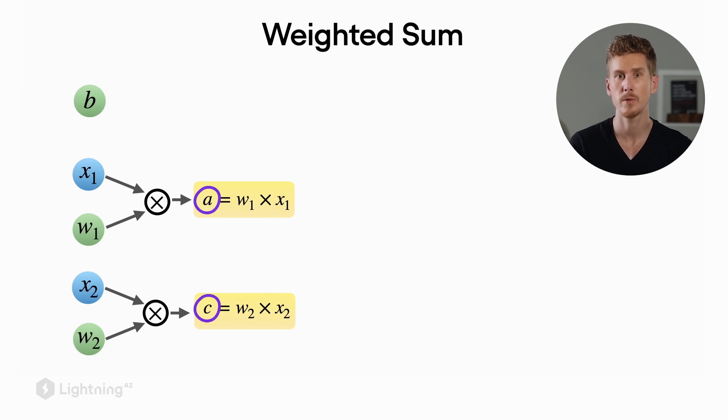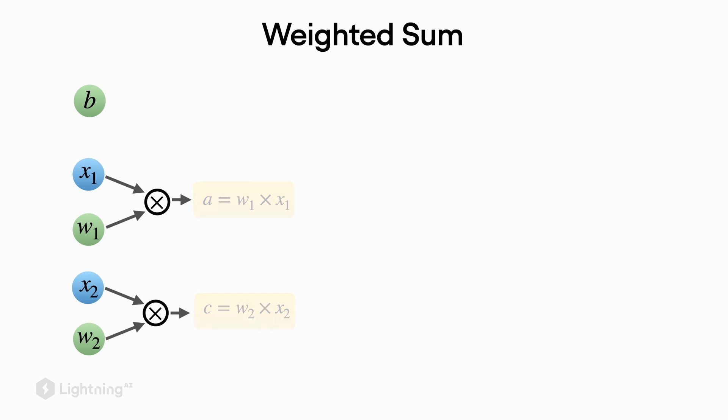Here we use two placeholder variables a and c. Once we've computed these two products, we add them together as part of the weighted sum computation, and then we add the bias unit to it, giving us d.